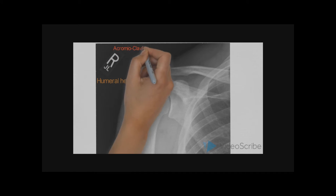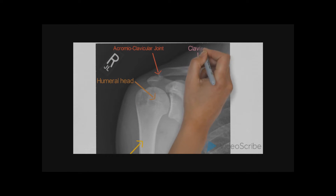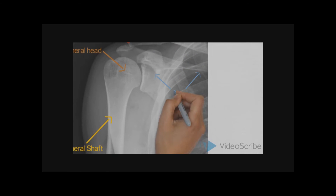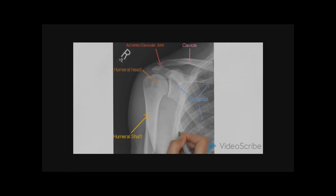We need to identify the position of the normal anatomical structures. First, we start with the humeral shaft. Then we move across to the humeral head. Then we look at the acromioclavicular joint, the clavicle, the scapula, and the ribs.